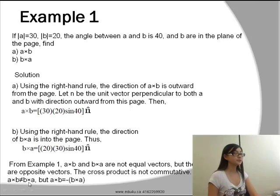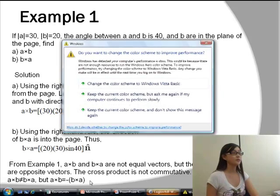Therefore, A cross B is not equal to B cross A, but A cross B is equal to negative of B cross A.